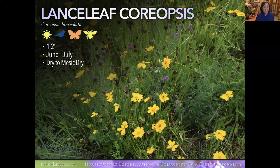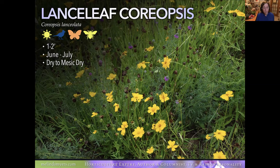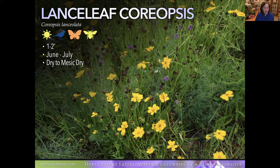Lance Leaf Coreopsis blooms all summer long and reseeds readily — you can see it spread through a garden bed. If it stops blooming or crowds out other plants, dig and divide to break up larger clumps, which invigorates the plant and keeps it blooming. Deadheading faded flowers will also keep it blooming and reduce reseeding, though leaving some seeds is fine since birds enjoy them. This one takes moist, well-drained to dry soil, so it works along the upper edge of your rain garden.